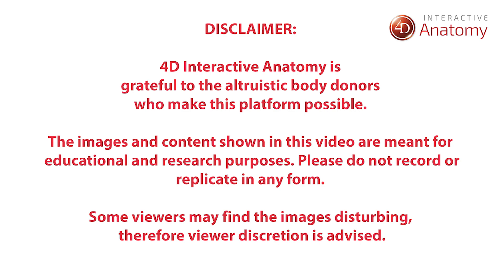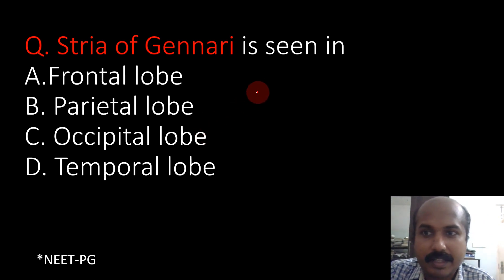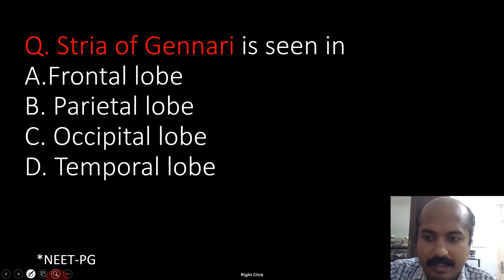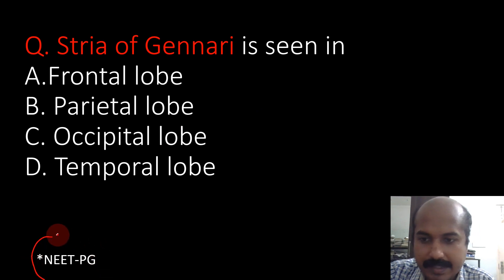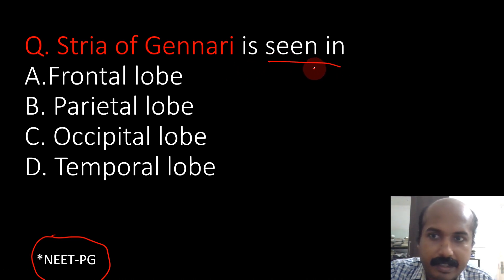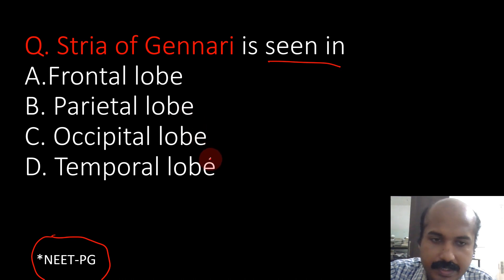Hello, today we are going to learn about the stripe of Gennari. This is a typical NEAT PG question. This was actually asked in one of the NEAT PG examinations: 'The stria of Gennari is seen in: A) frontal lobe, B) parietal lobe, C) occipital lobe, D) temporal lobe.'